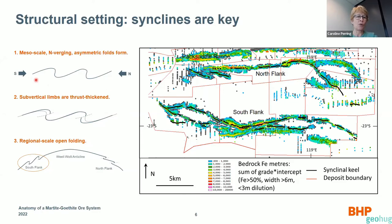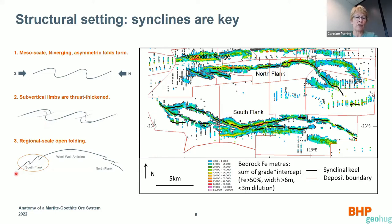Looking more closely at the structural setting, this iron bedrock iron-metres map collapses 3D information into two dimensions — hotter colors indicate thicker and more iron-rich intercepts, cooler colors thinner and less iron-rich areas. Mineralization is closely associated with synclinal structures, and the deposit extends about 20 kilometres of strike length from west to east across the Weeli Wolli Dome — a doubly plunging anticline — with multiple mesoscale folds superimposed. The first generation of folding are mesoscale north-verging asymmetric folds with thrust thickening on the steep limbs, increasing thickness and fracture permeability of the north-facing limbs. A second generation of folding has refolded these early folds about the Weeli Wolli anticline, giving South Flank on the southern flank and North Flank on the northern flank.